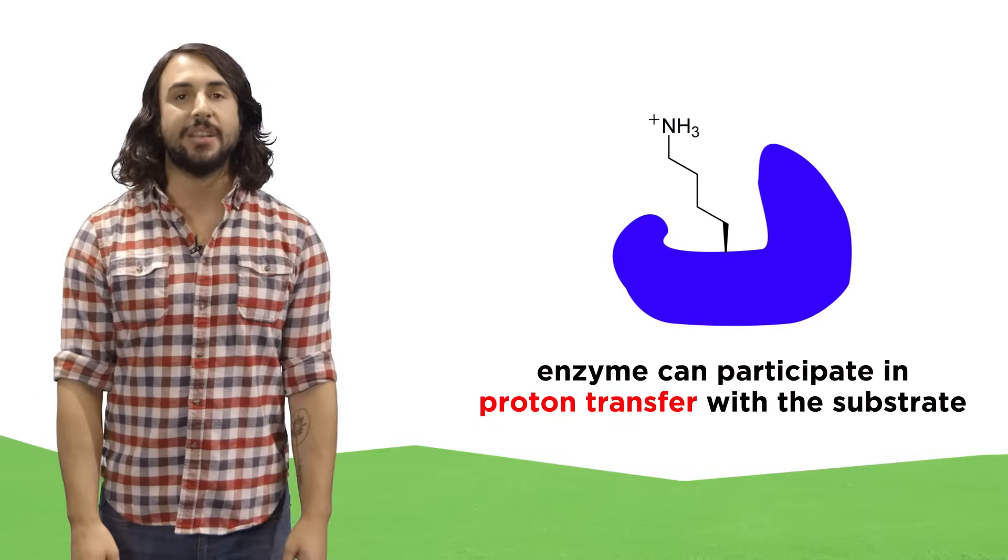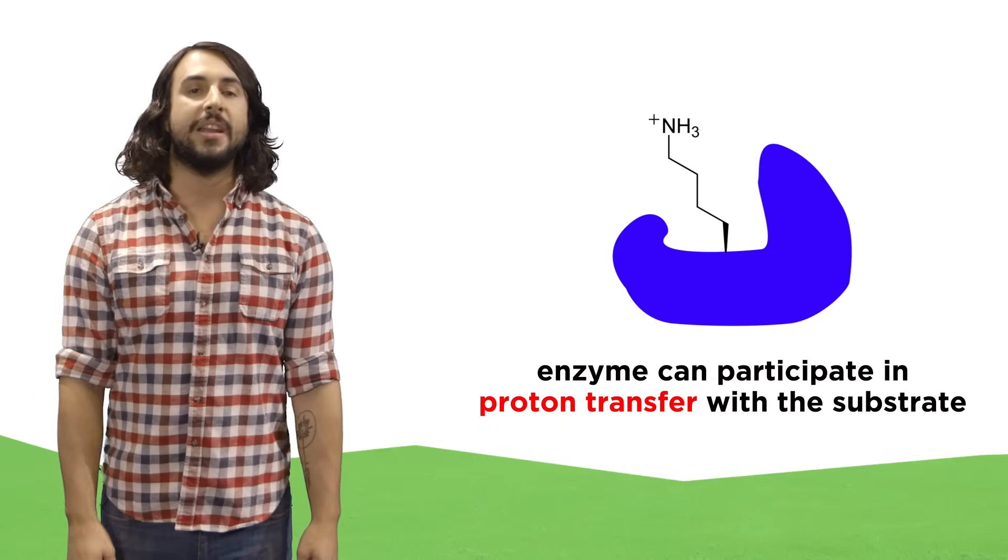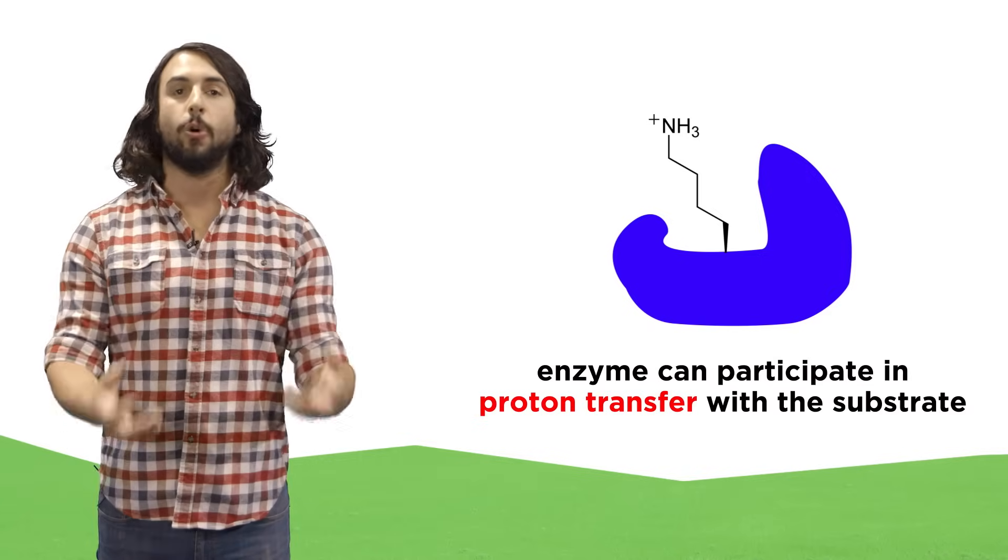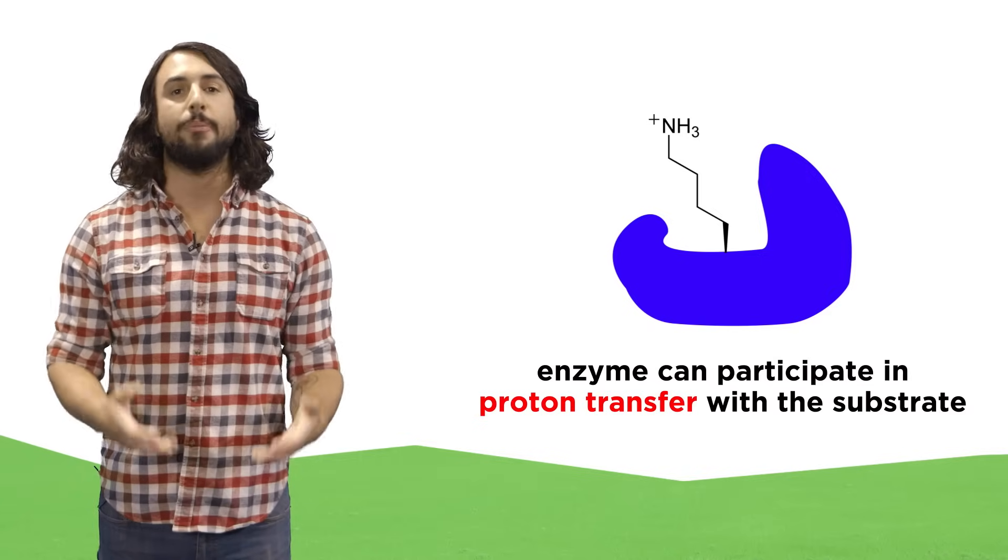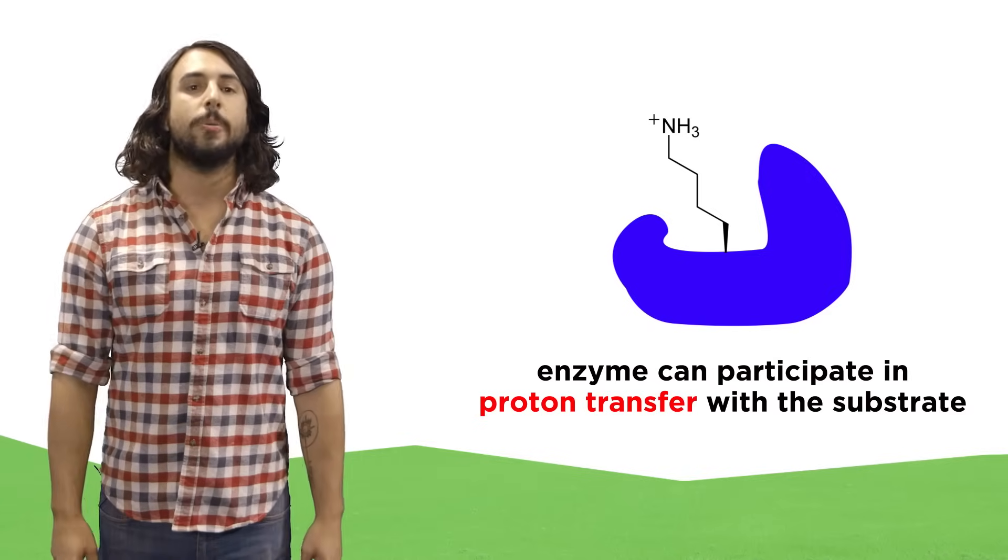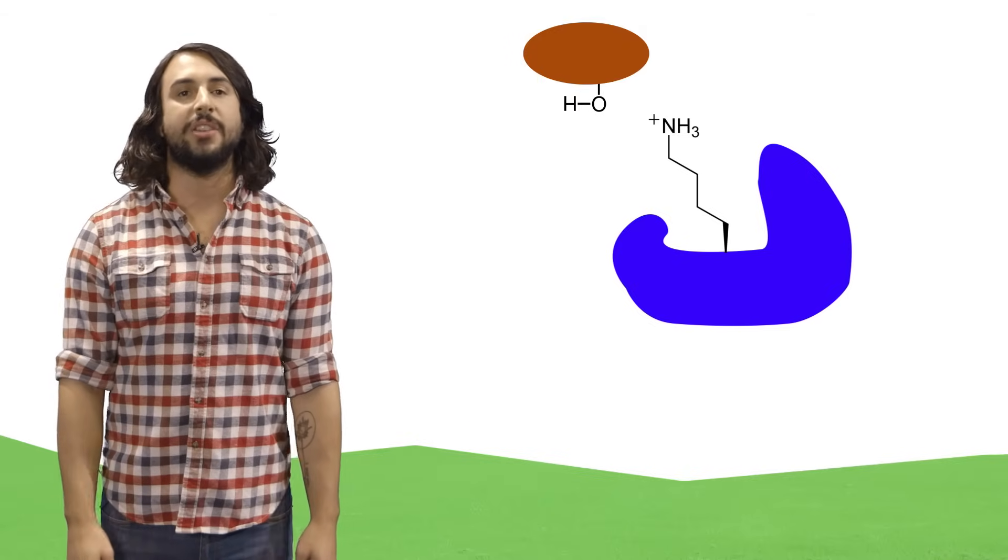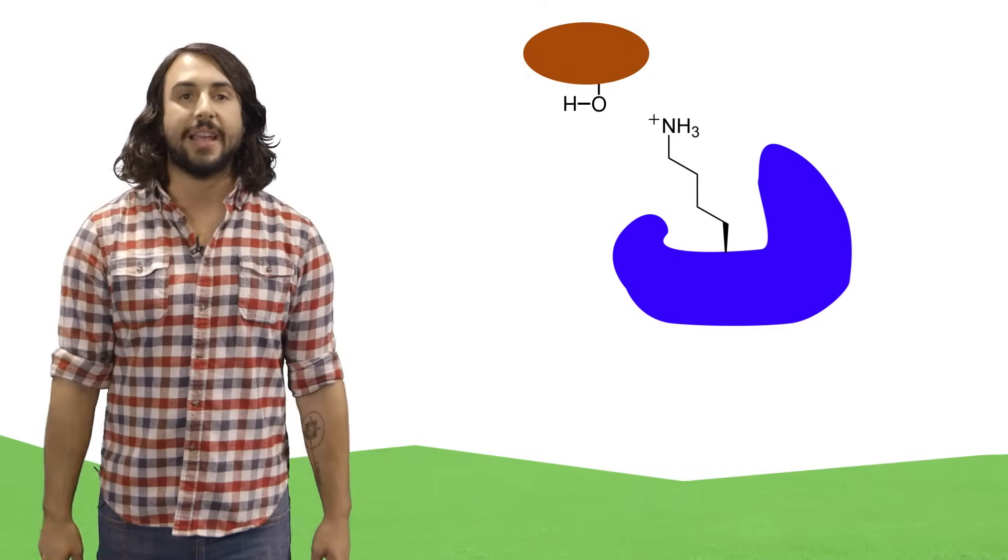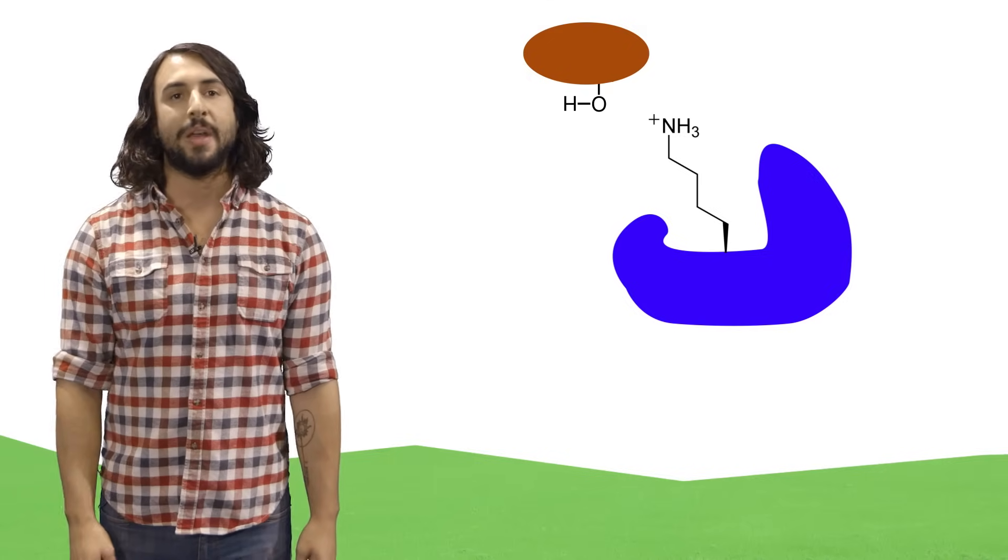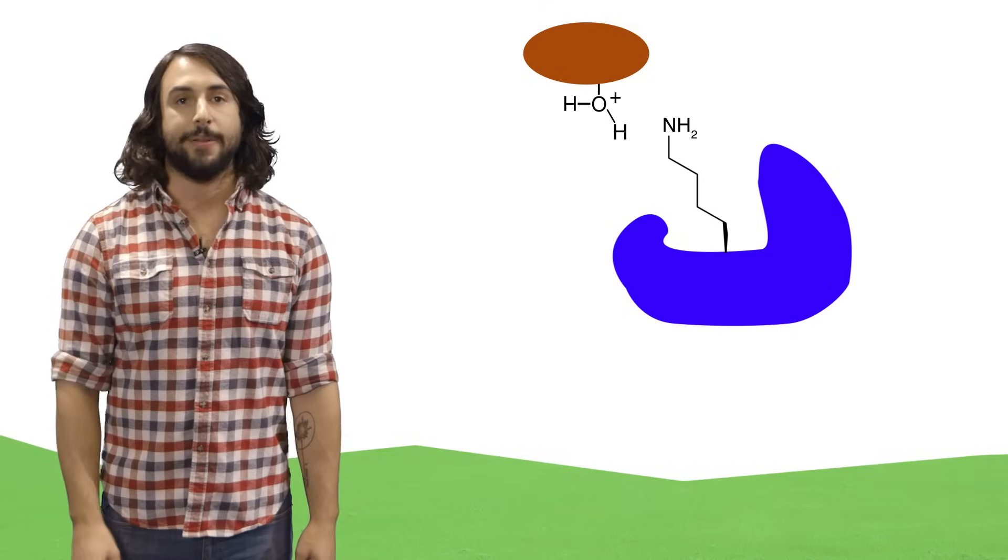Sometimes an enzyme simply does acid-base catalysis, meaning it either donates a proton or accepts a proton from some functional group on the substrate to make it more reactive. An example of this is when a residue in the active site is acidic, like lysine, which if protonated at the amino group can donate this additional proton.